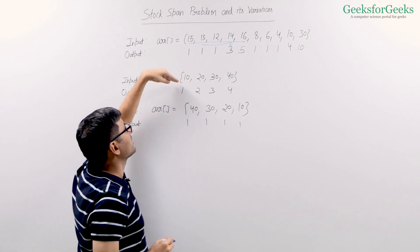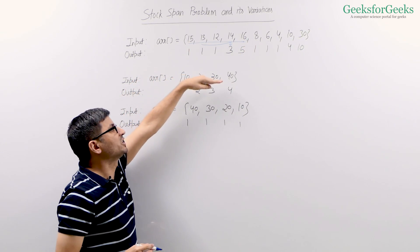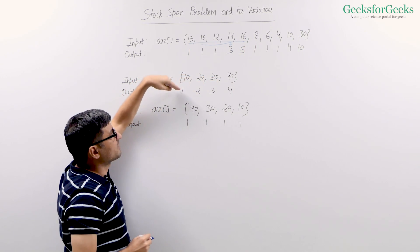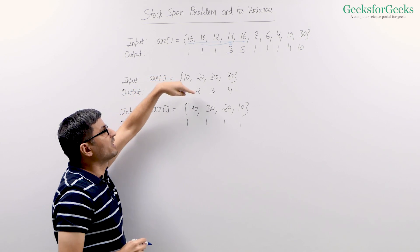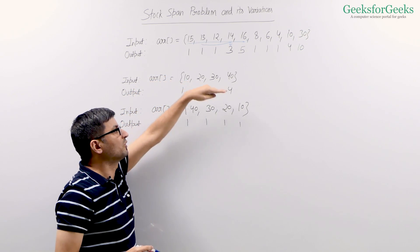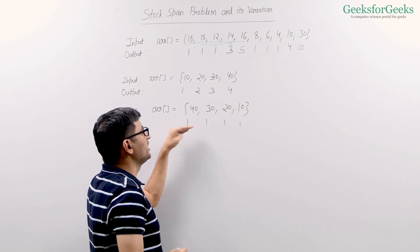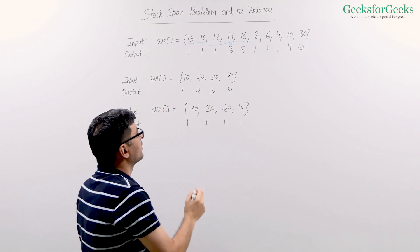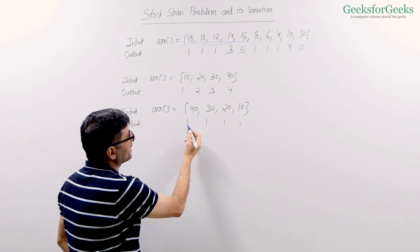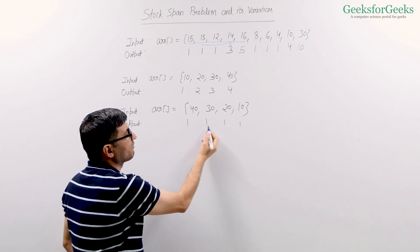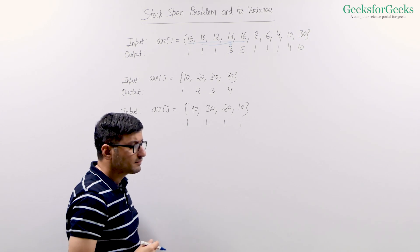If your array is sorted in increasing order, your span is going to be 1, 2, 3, 4. If your array is sorted in decreasing order, then your span is going to be 1, 1, 1, 1 for all days.